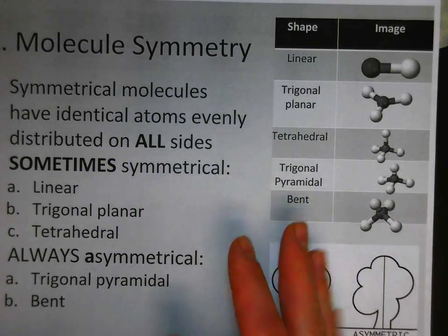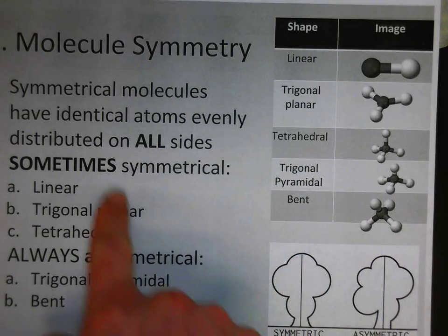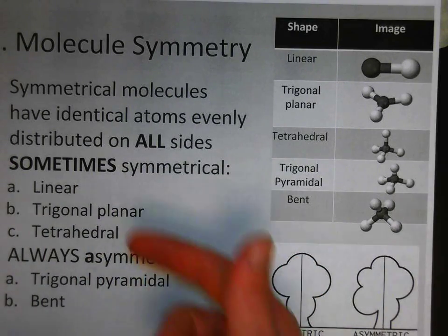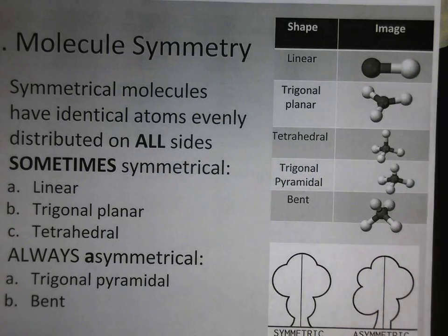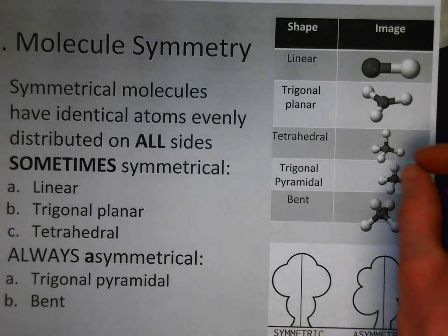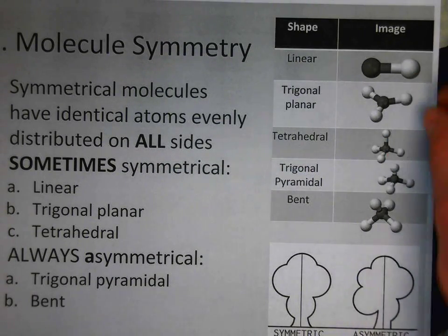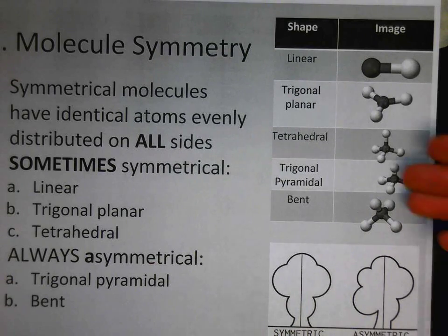Now some shapes are sometimes symmetrical: linear, trigonal planar, and tetrahedral. So if we have the same atoms distributed all the way around, that can be a symmetrical shape.